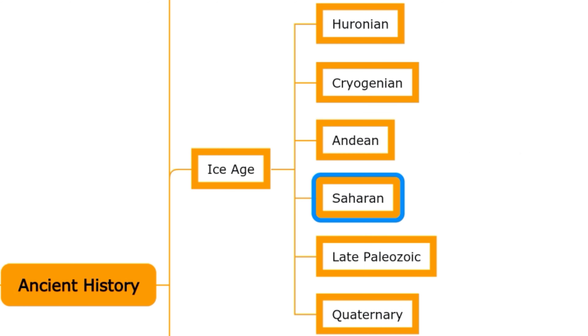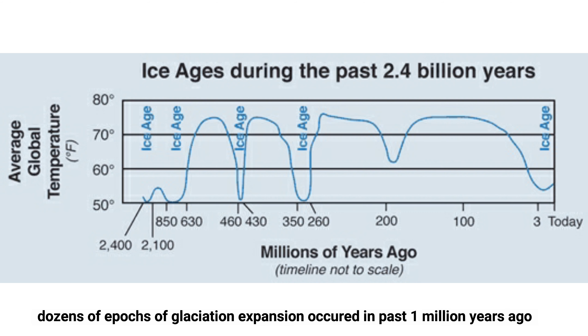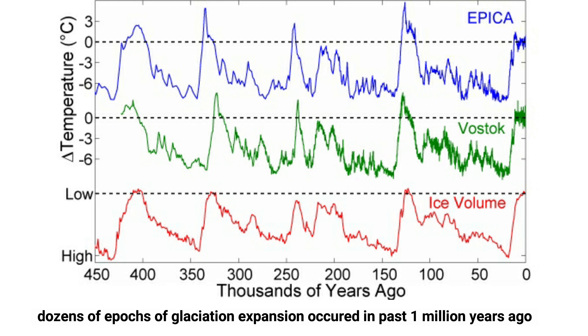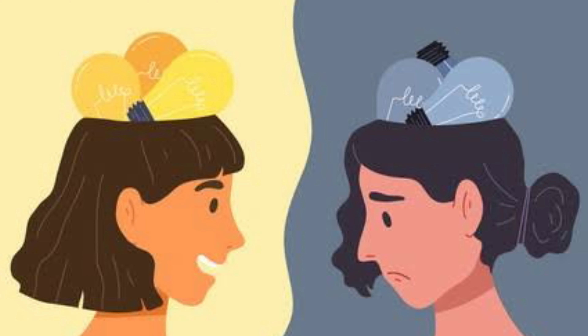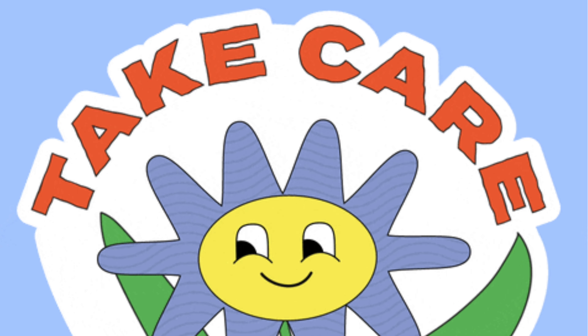There have been at least five major ice ages in Earth's history: the Huronian, Cryogenian, Andean-Saharan, Late Paleozoic, and the latest Quaternary ice age. Dozens of epochs of glaciation expansion also occurred in the past 1 million years. We will discuss all of them in detail in a different series — stay tuned for more, and don't forget to subscribe to the channel!